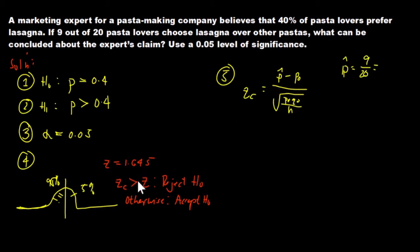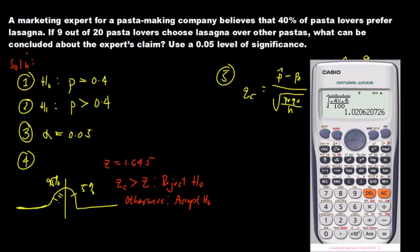Let's use our calculator. 9 by 20 equals 0.45 or 45%. So we have P hat equals 0.45.